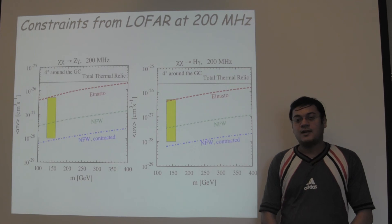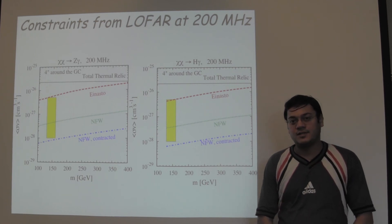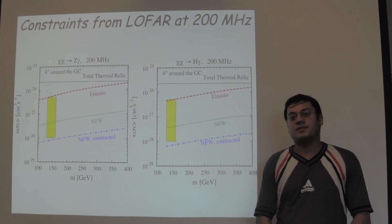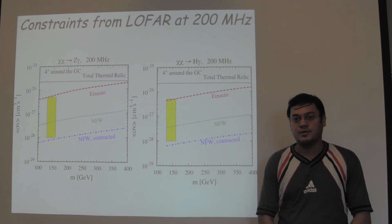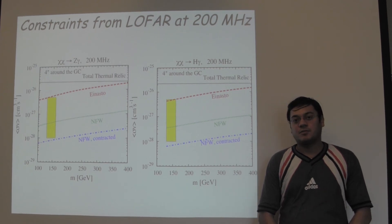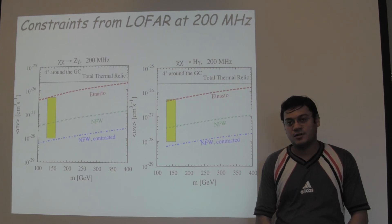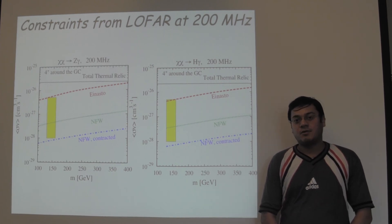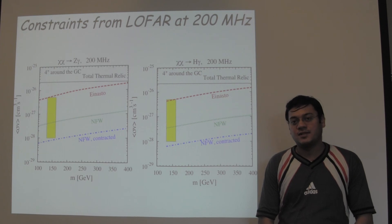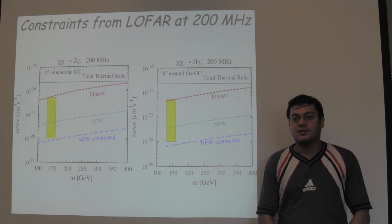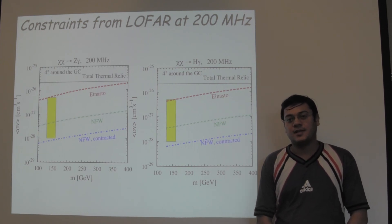However, LOFAR can easily confirm or refute the presence of this line using observations of the galactic center for about a few hours. Although our work depends on the modeling of the galactic center, we find that the dependence is very modest. We also want to emphasize that our work is independent of any particle physics dark matter model since we have taken the electrons and positrons only from the Z decay and the Higgs decay.